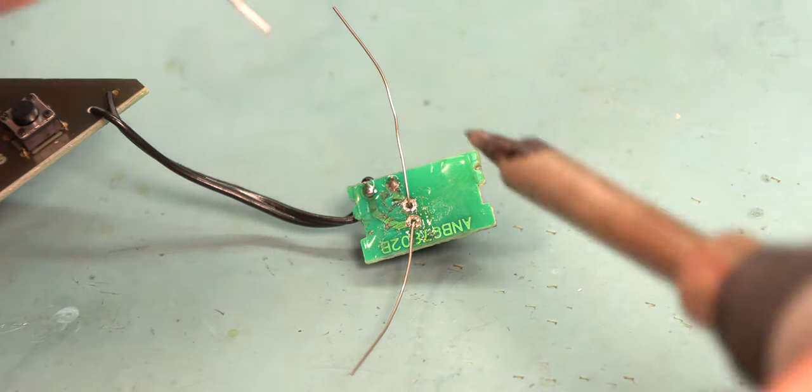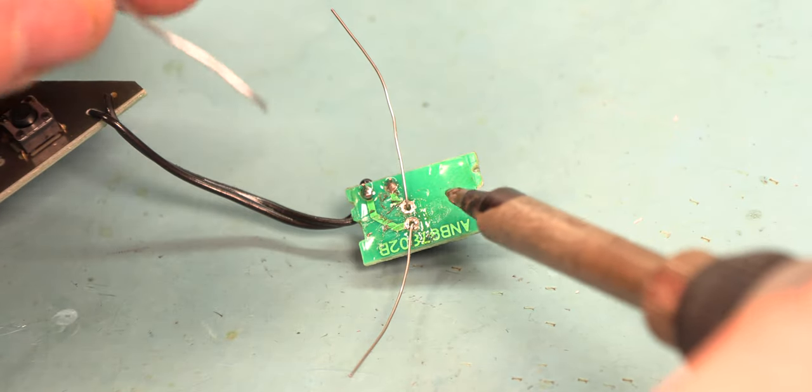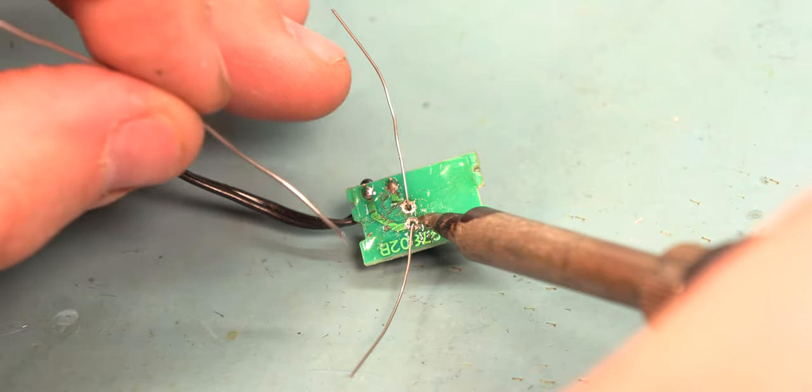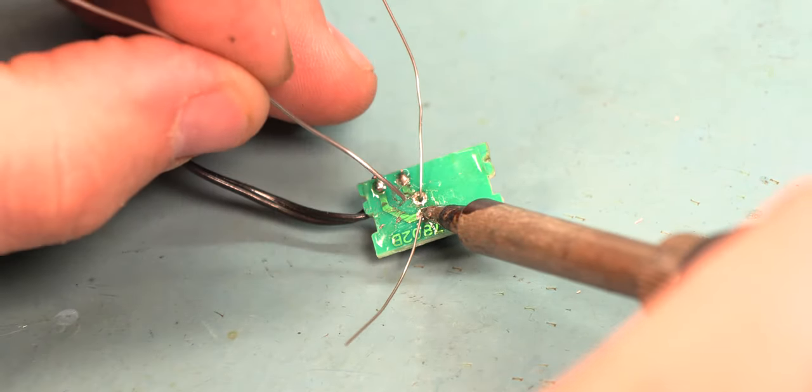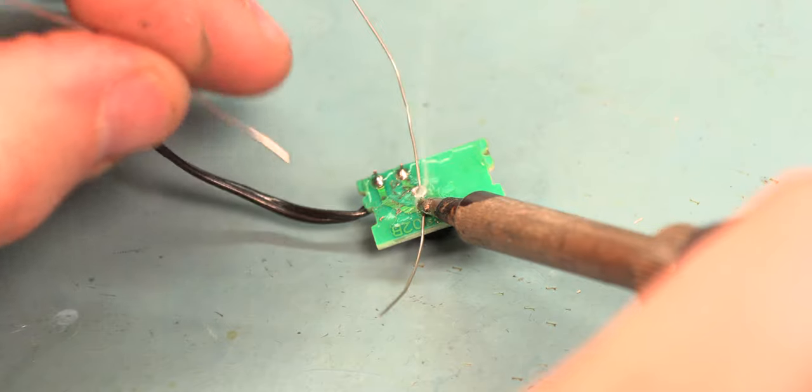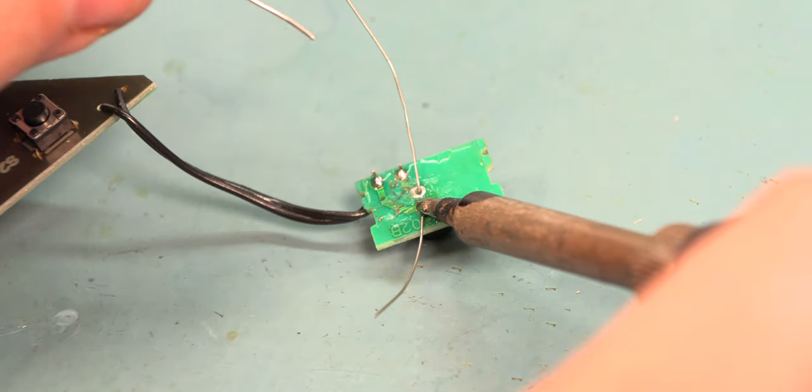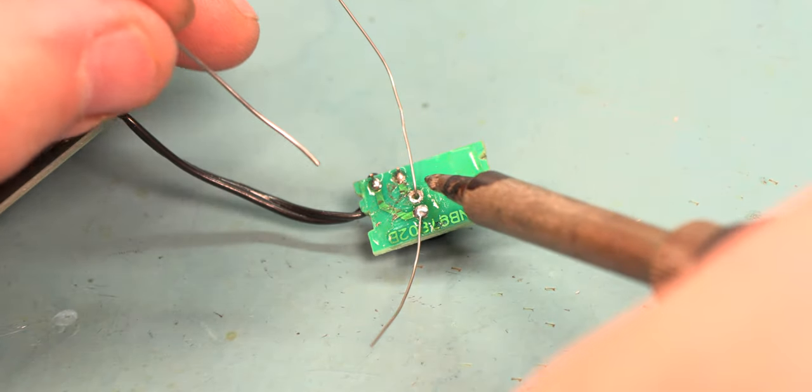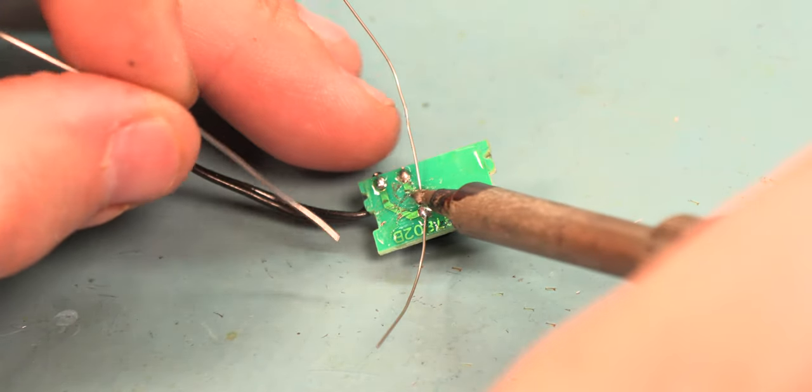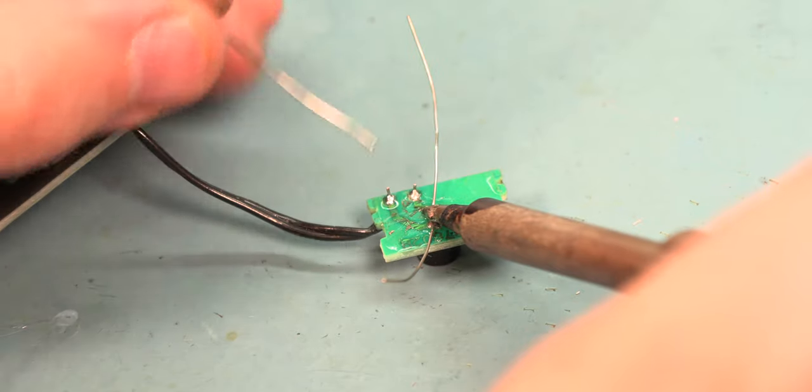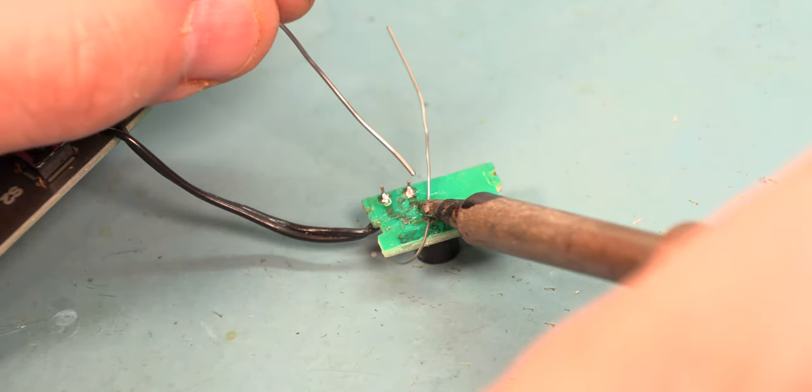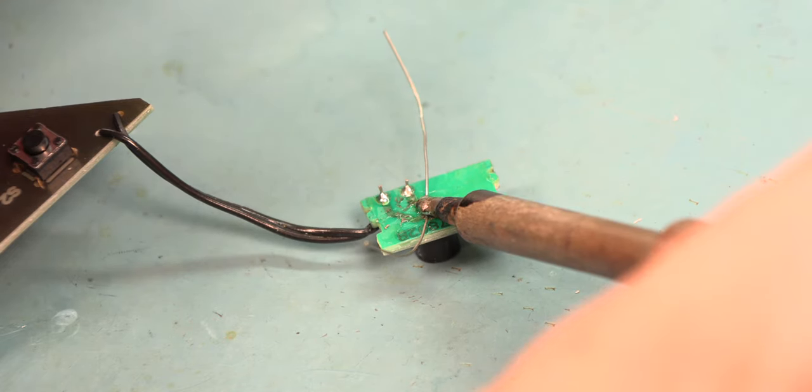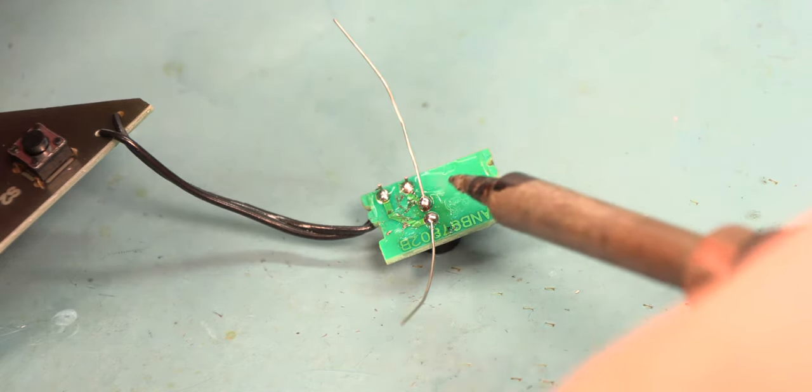To solder the photocell, we'll apply heat to the junction between the lead of the photocell and the pad on the board. We'll feed in a small amount of fresh solder that's included with the kit and we'll release the heat. We'll apply heat at the junction between the pin of the photocell and the pad on the circuit board. We'll feed in a small amount of fresh solder. We'll remove the heat.